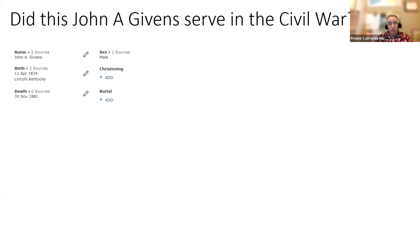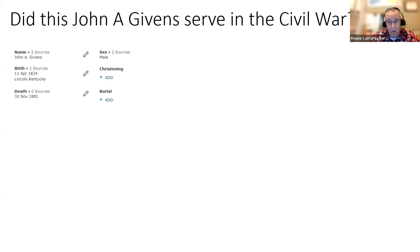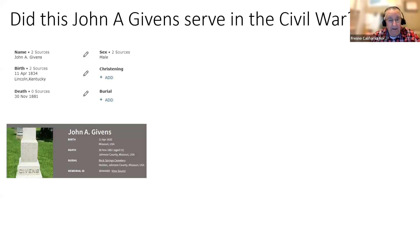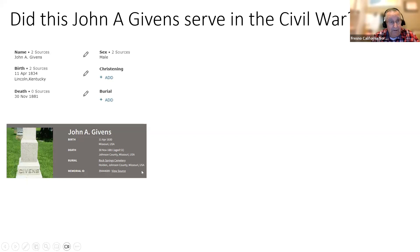Let's look at some real examples. I was doing research on a John A. Givens, and my question was: did he serve in the Civil War? All I knew to begin with was a birth date and place — Lincoln County, Kentucky, born in 1834, died in 1881, don't even know where. No spouse. One of his sources was Find a Grave. Based on the gravestone, it gave the death date which agreed with the 1881 date in FamilySearch, and then gave his age in years, months, and days, which calculated out to April 11th — but 1830, not 1834 as found in FamilySearch.